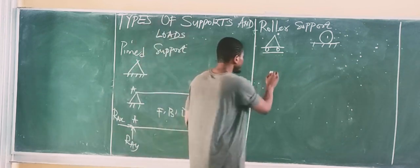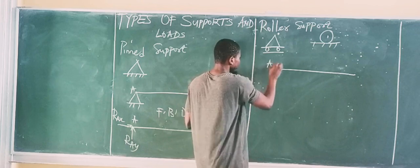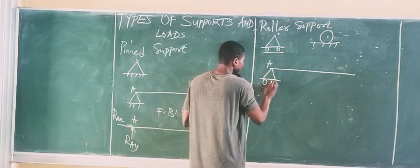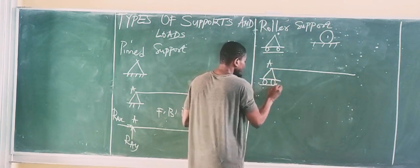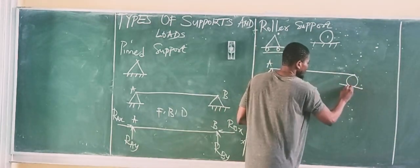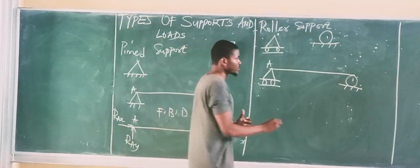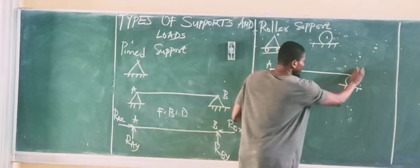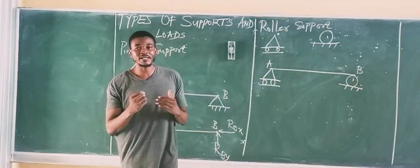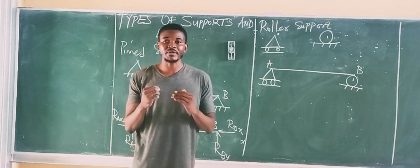Let's say we have a Pinned at point A and then we have a Roller at point B. It can also appear in another form. These are the two ways in which a Roller Support can be represented.